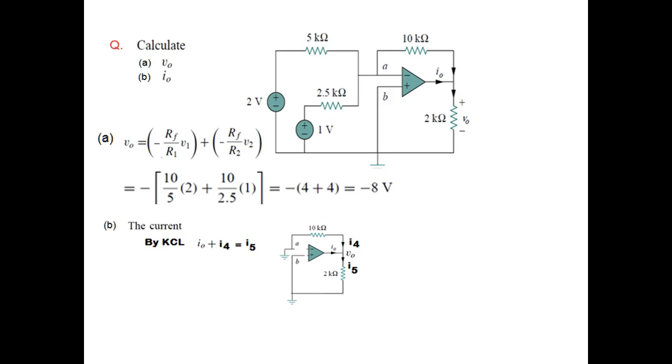Now we come to the second part to find the current. The circuit is redrawn here with the names of these currents given. Let's call this current as I4 and the current leaving as I5. At this node we can write Kirchhoff's current law: I0 plus I4 equals current leaving I5.